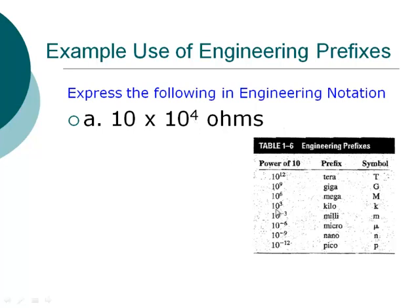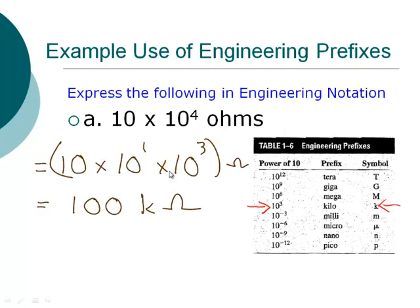In this case, we're going to end up with 10 to the 3rd, and that prefix is kilo, using a small k. So I'm going to multiply this out: 10 times 10 to the 4th ohms is equal to 10 times 10 to the 1st times 10 to the 3rd ohms, and that is 100 kilohms. I've multiplied 10 times 10 to get 100, and replaced 10 to the 3rd with kilo-ohm.